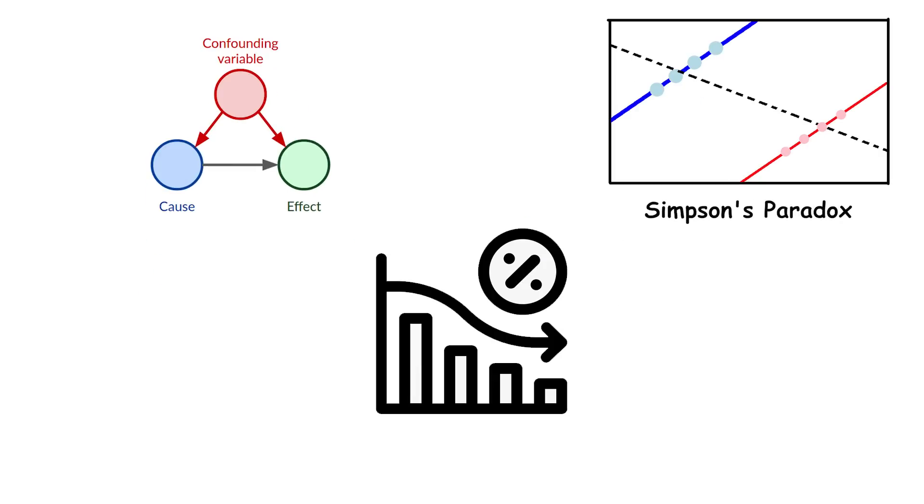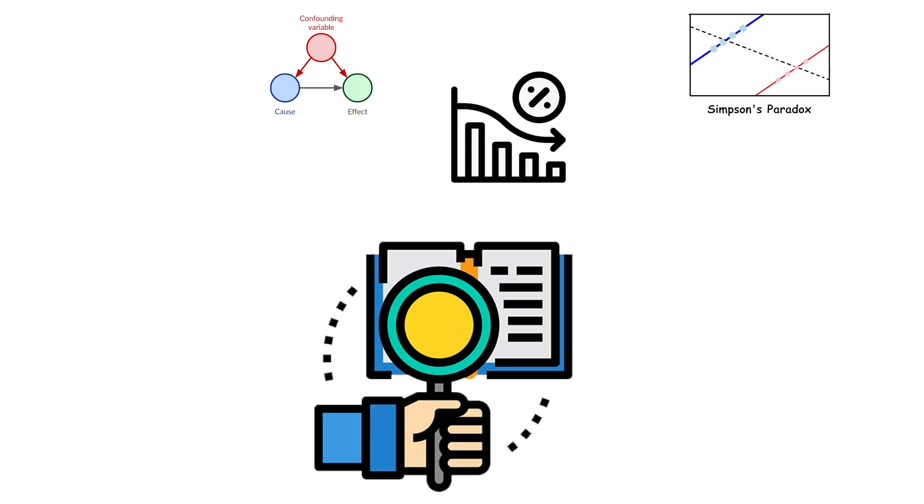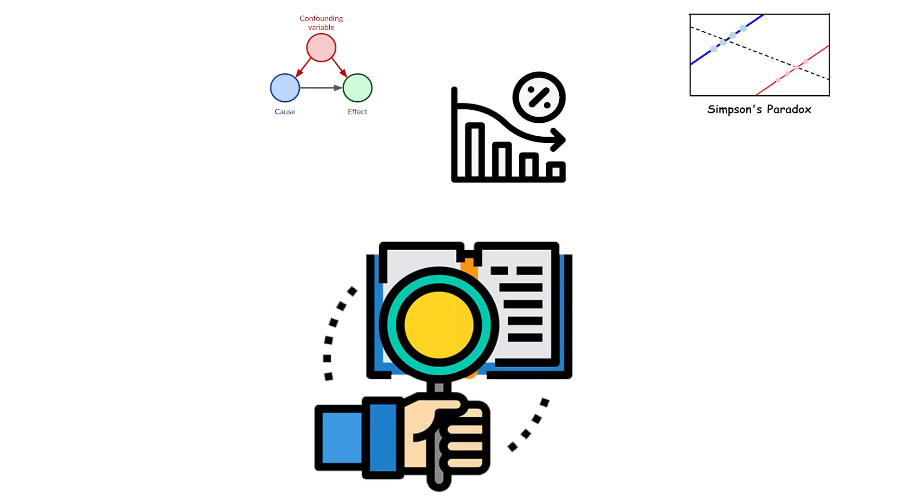To decide whether the treatment is truly effective, you need to look at the data carefully, considering the impact of the third variable. In some cases, the combined data gives the right conclusion, and in others, the separate groups give the correct answer.